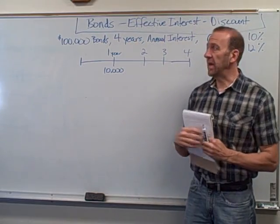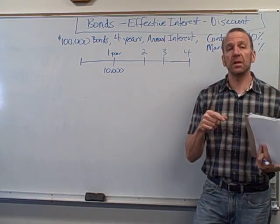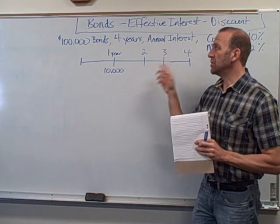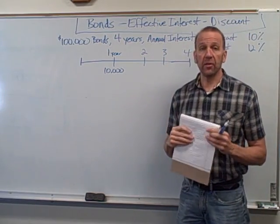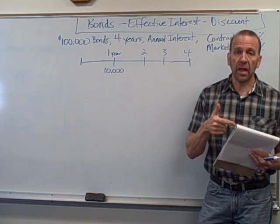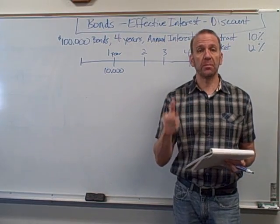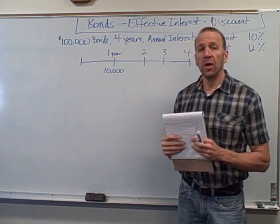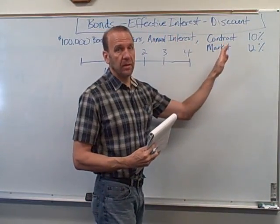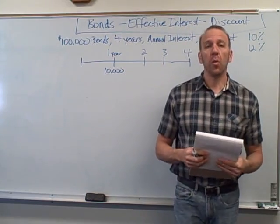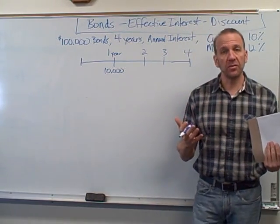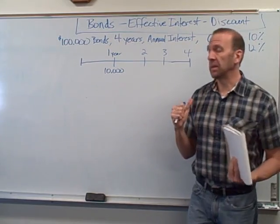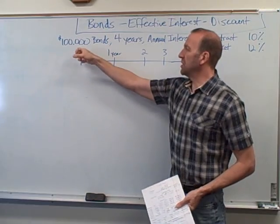Okay class, we're going to look at bonds right now - the effective interest method. In a previous video I talked about bonds and their characteristics, and now I'm covering the different methods and journal entries involved. There's the effective interest rate and the straight-line method. I have a video on the straight-line covering both discount and premium. The effective interest method is more complicated but more accurate and makes sense.